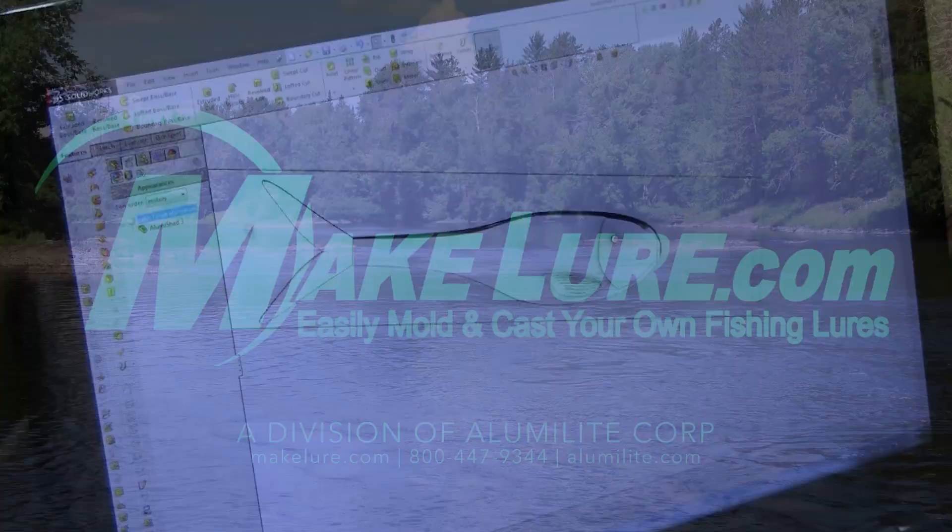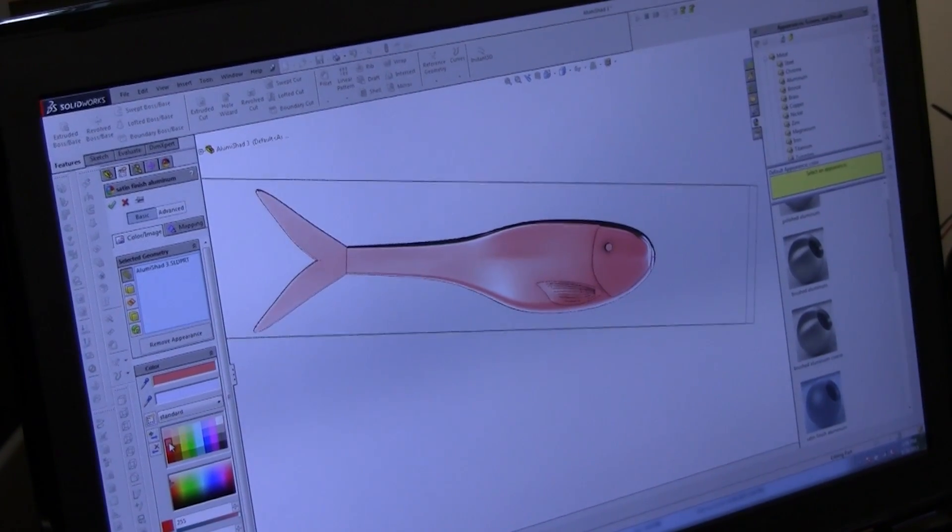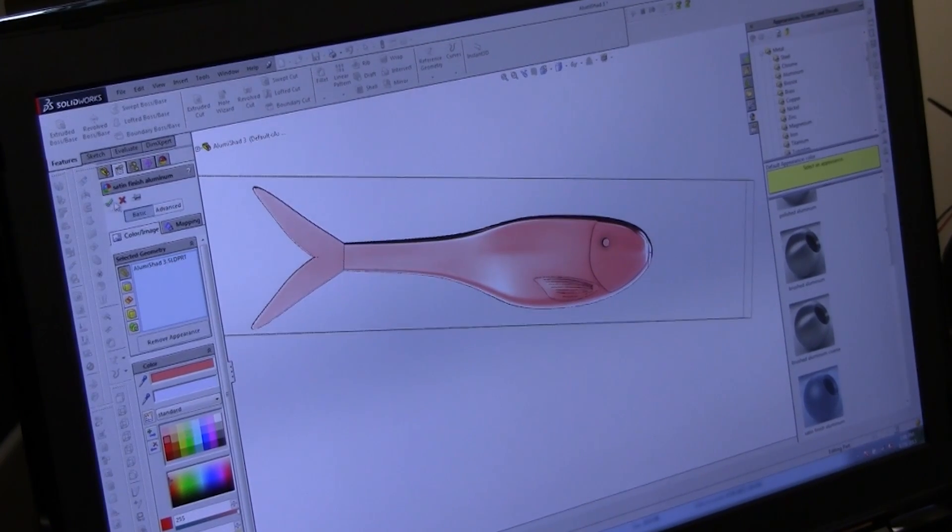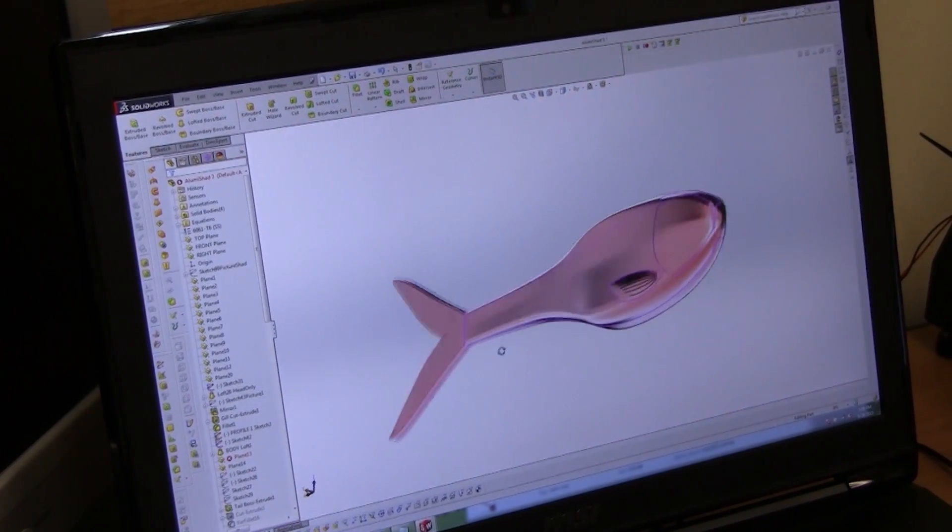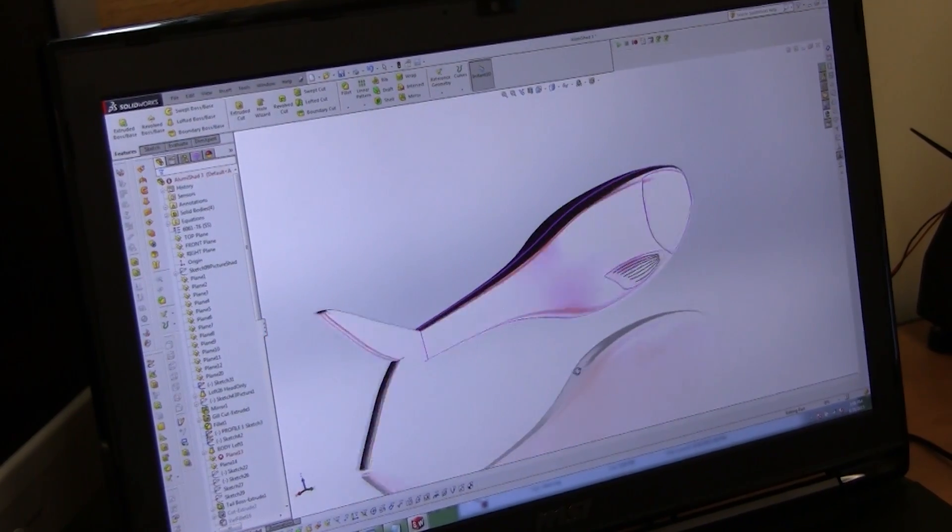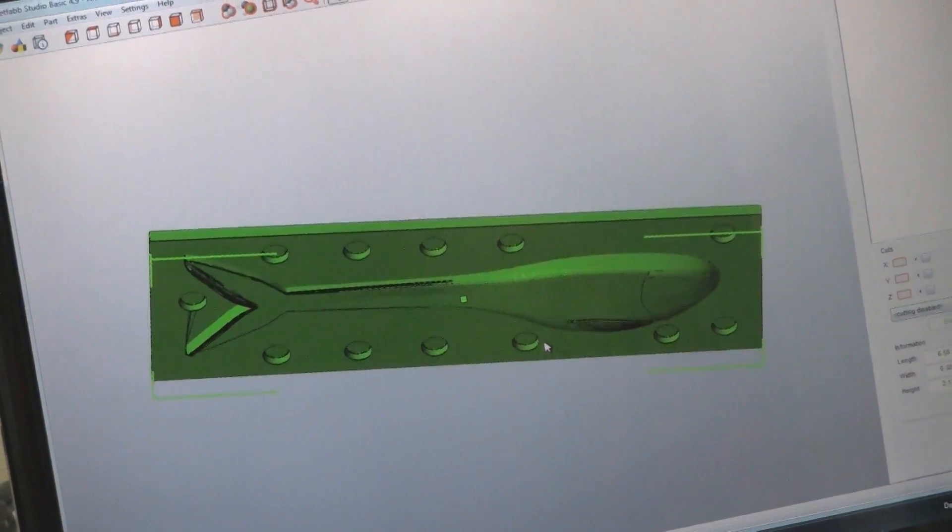In this video, we're going to show you how to take engineering software called SolidWorks, design a part, reverse engineer it, and then actually 3D print that reverse engineered part to make our silicone rubber molds. So then we can go into production of a custom lure.